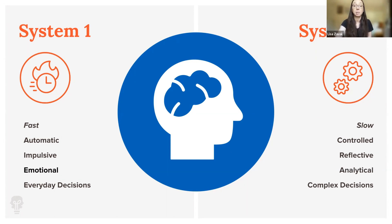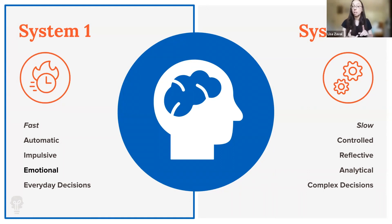We do tend to rely more on System 1 when time for judgment is a bit more limited, and we also tend to rely more on System 1 when the decision we're making feels more emotional.